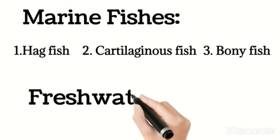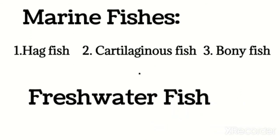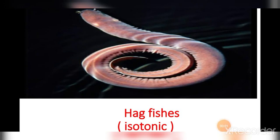The second type is freshwater fishes, which live in freshwater. Studying marine fishes one by one: the first example is hagfish. Hagfish are isotonic, meaning there is a balance of salt and water concentration between the hagfish body and their external marine environment, so they do not need any process to regulate salt and water concentration.